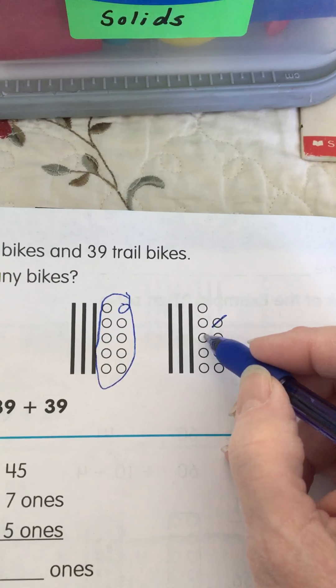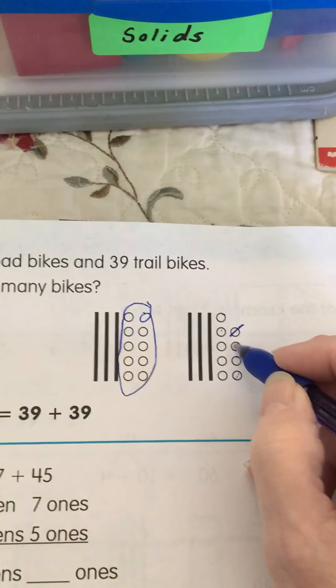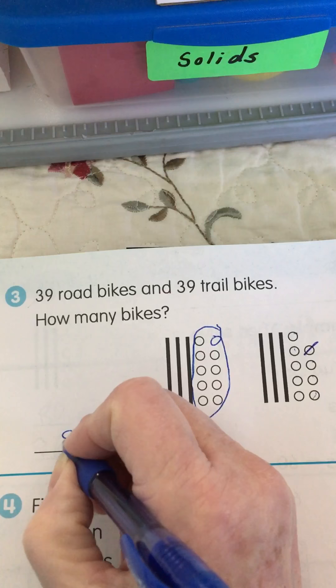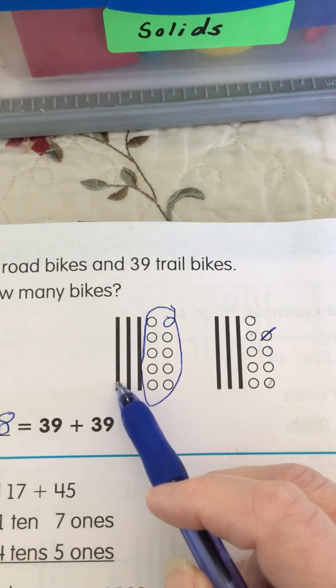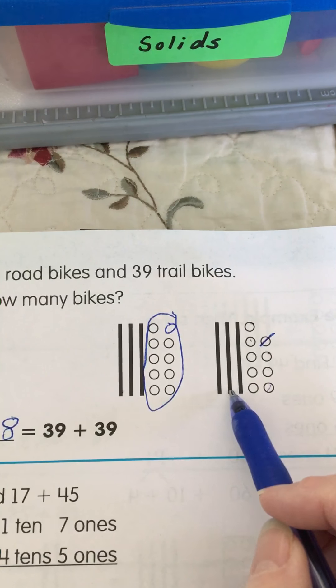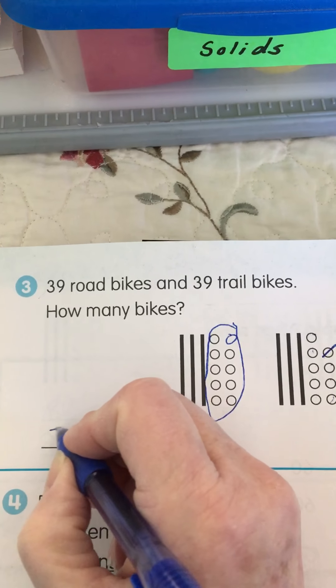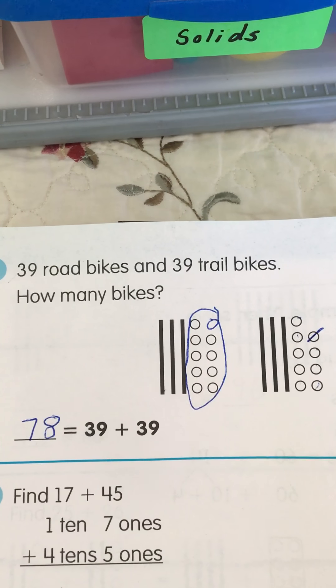We have 1, 2, 3, 4, 5, 6, 7, 8. So we have eight ones. And how many tens? 1, 2, 3, 4, 5, 6, 7. Seven tens. So our answer would be 78.